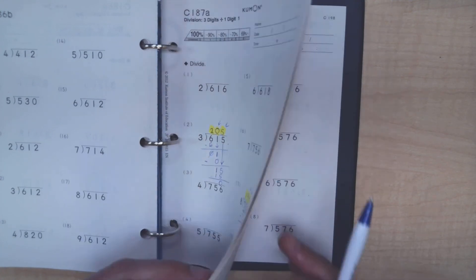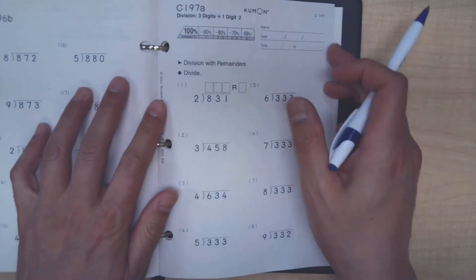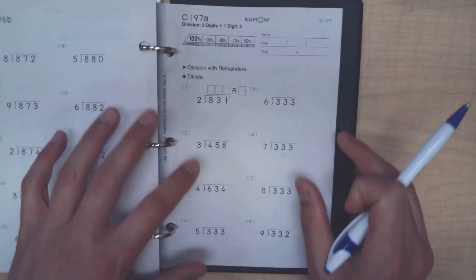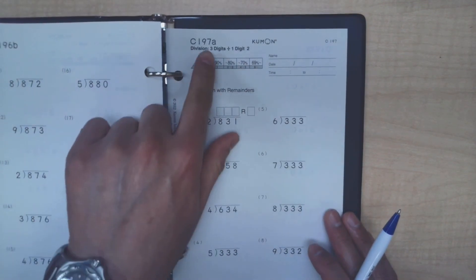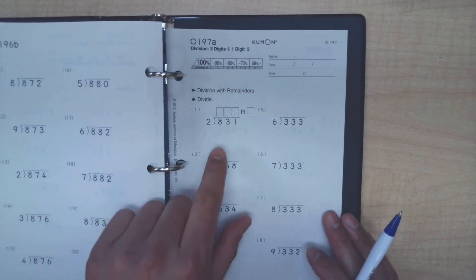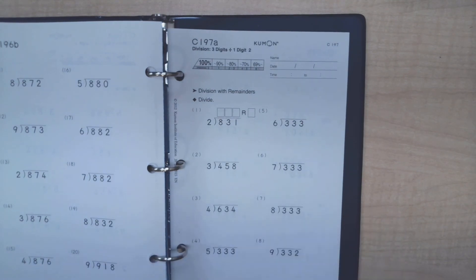So let's go to a more special one, way down closer to the end of the level. Now here, Kumon puts in another complication. This is page 197. There's a slightly more complicated problem because there's a remainder involved. But if you think back, we've done all of this.